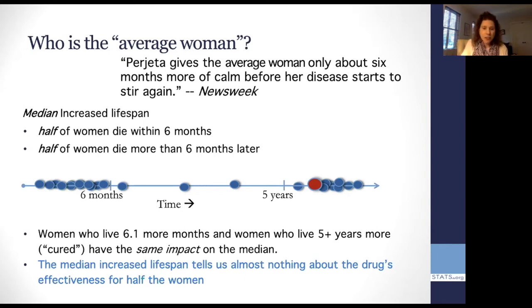And in fact, very interestingly, a couple of years after this happened, perjeta became a foundational part of the treatment for women with a certain genetic marker, because in fact, it was a miracle drug for some women. And that's what the median would always miss.